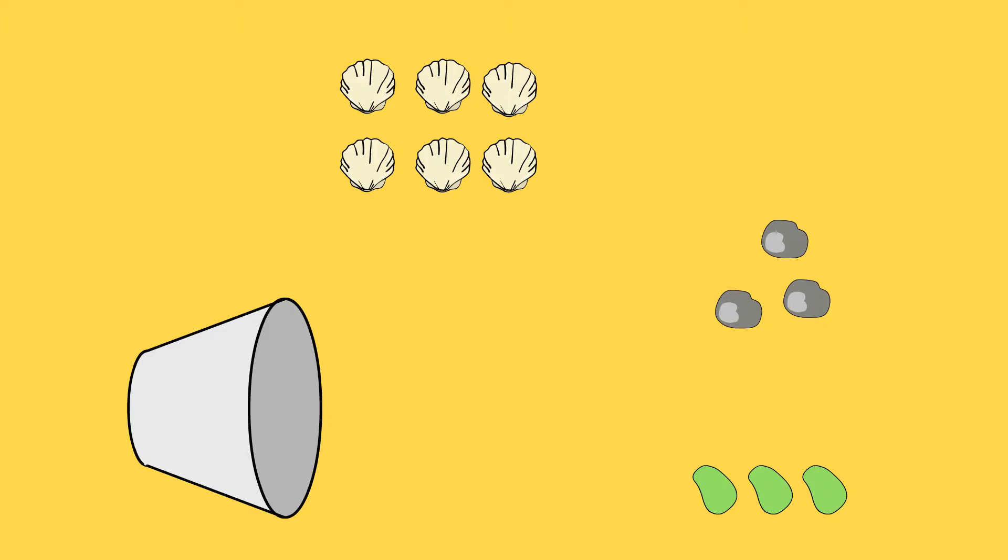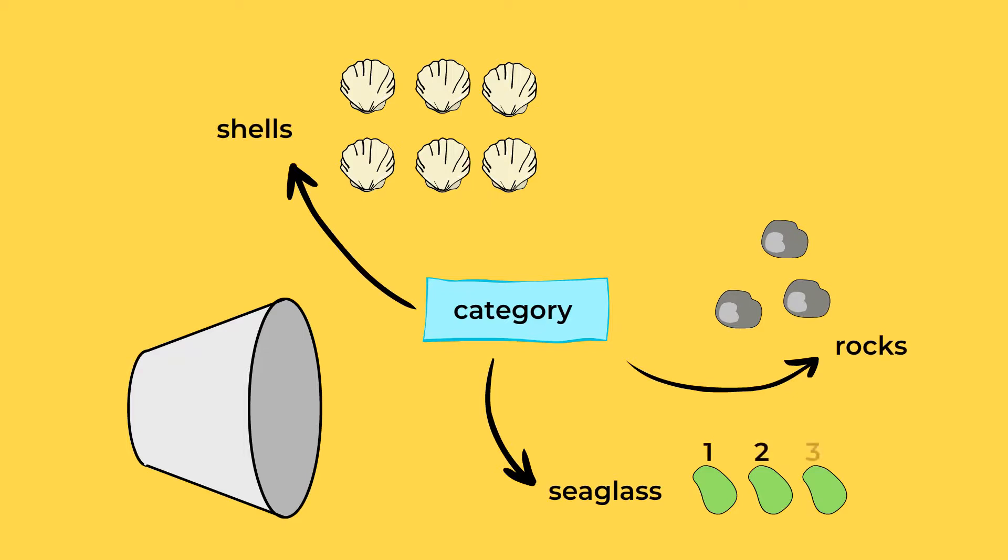And now, let's count the numbers in each category. A category is a group of objects like rocks, shells, or sea glass. All right, let's start with the sea glass. And there are one, two, three pieces of sea glass.